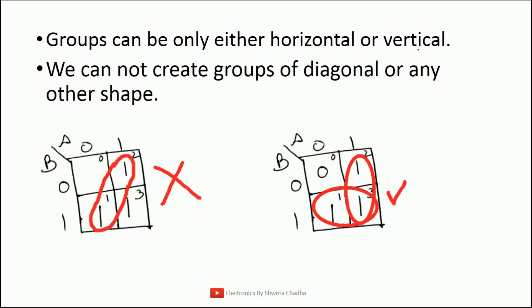The next rule says that grouping can only be horizontal or vertical. We cannot go for diagonal or any other shape. As you can see, diagonal grouping is not allowed — only horizontal or vertical grouping is possible.